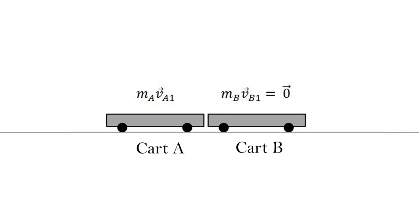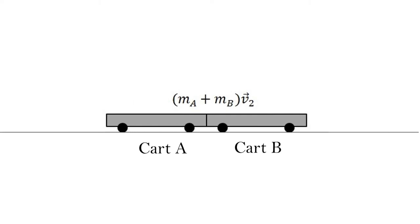When we look at our system post-impact, we now have to account for the masses of both cart A and cart B. Because they collide in an inelastic collision, they will have the same velocity, V2.